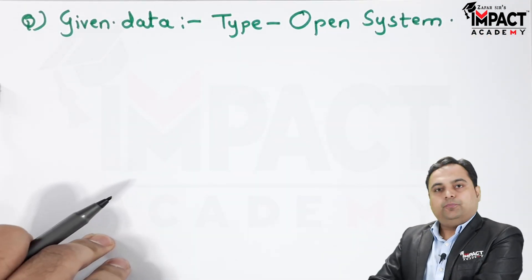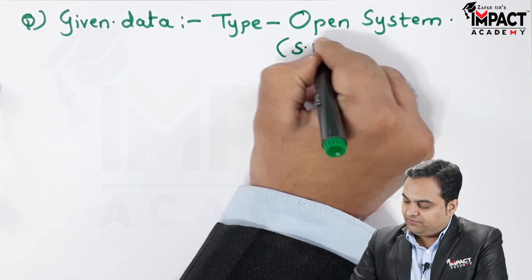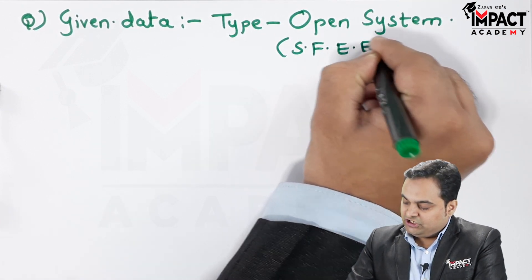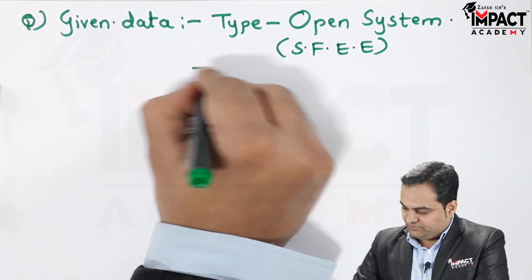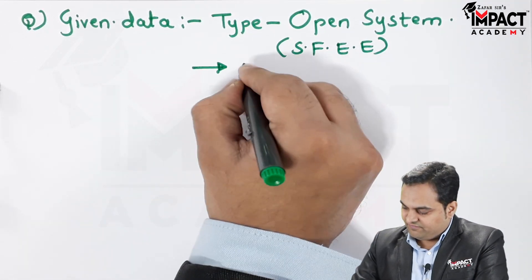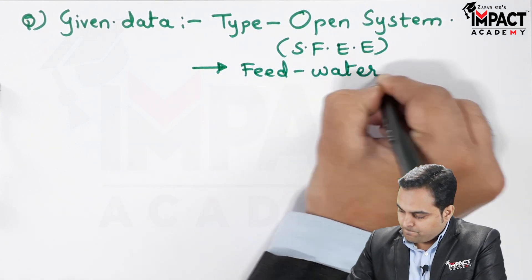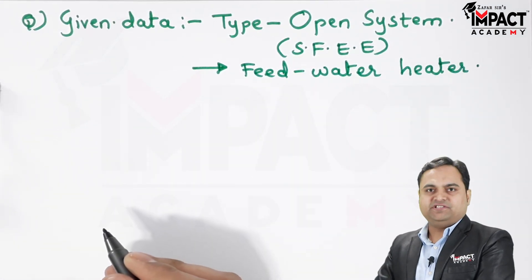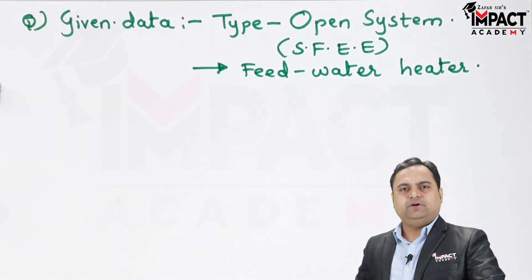As the problem belongs to an open system, we can apply SFEE over here, so it is based upon the Steady Flow Energy Equation. The type of device given is a feed water heater which is of direct mixing type. I will be explaining what this feed water heater is in the further part of the problem.